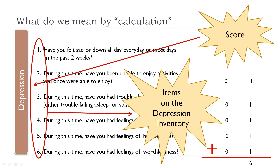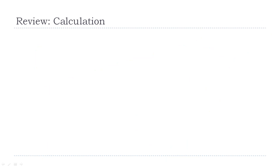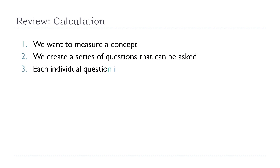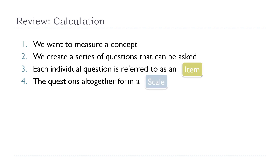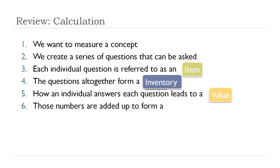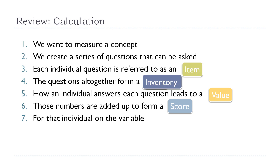Let's review quickly and keep it simple. We want to measure a concept, so we create a series of questions. Each individual question is referred to as an item. The questions all together form a scale variable, or an index or an inventory. How each person answers each question leads to a value — a number assigned for that response. Those numbers are added up to form a score for that individual on the variable. And luckily, Excel and various statistical packages do all the work for us.